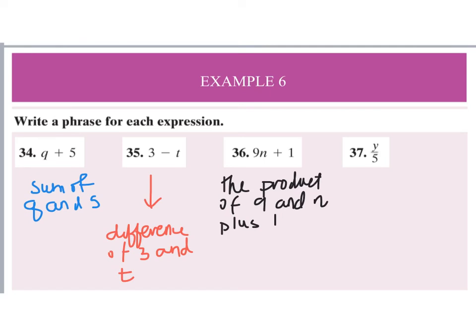For the final expression in this set, y divided by 5 could be written as 'the quotient of y and five.' Your answer might be phrased a little differently and that's okay.